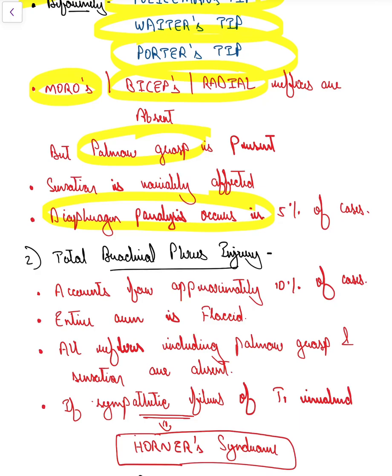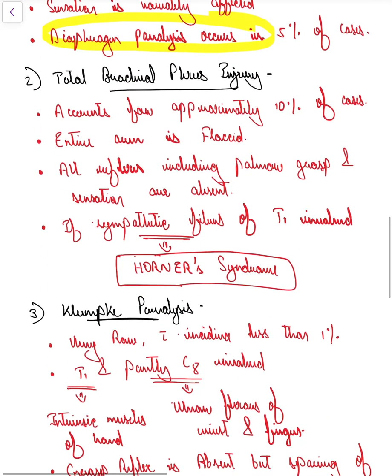Sensation is variably affected and there can be associated diaphragmatic paralysis in five percent of cases. Next is the total brachial plexus injury, which accounts for approximately 10 percent of cases. Here the entire arm is flaccid, all reflexes including palmar grasp and sensation are absent, and if associated with T1 injury, Horner syndrome can be expected.